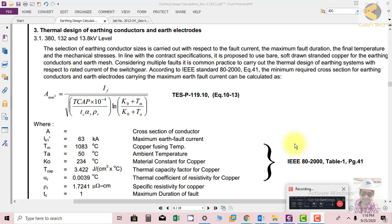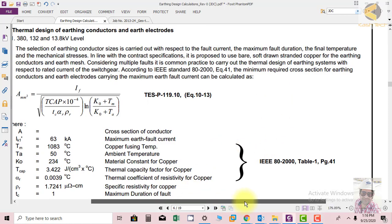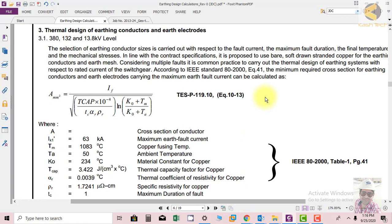melting down or getting damaged. We consider the maximum fault duration, the final temperature, and the mechanical stresses. When current passes through the conductor, it will heat up and each conductor has a thermal time constant. We have to take care of each aspect.